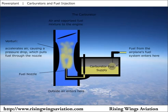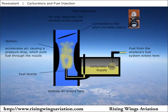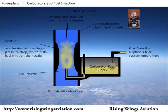Next, the fuel-air mixture encounters a throttle valve inside the carburetor. The pilot manipulates the position of the throttle valve to adjust the engine's power. At idle power, the valve is nearly closed, greatly restricting the flow of fuel and air to the engine. At full power, the valve is completely open.